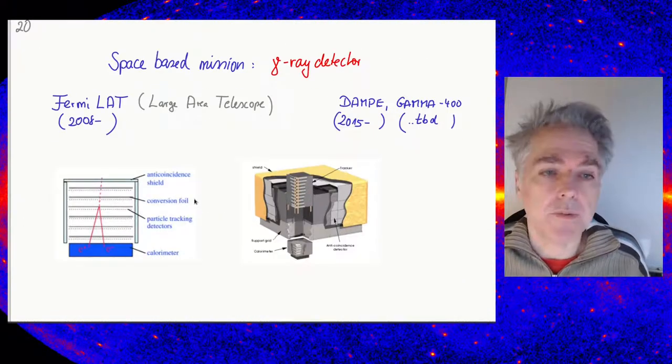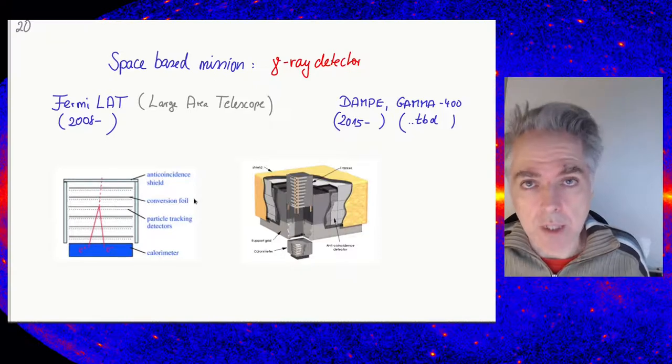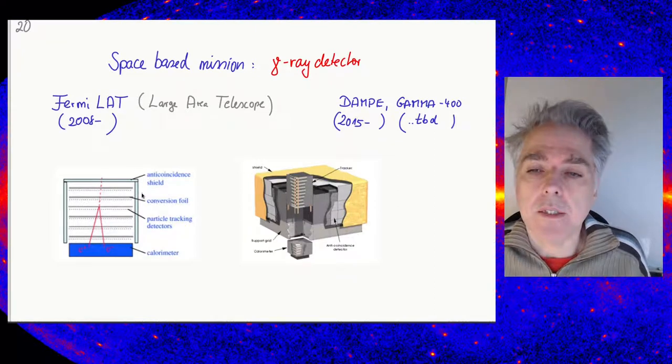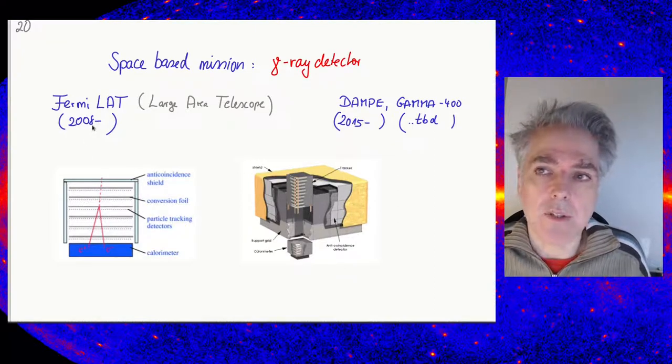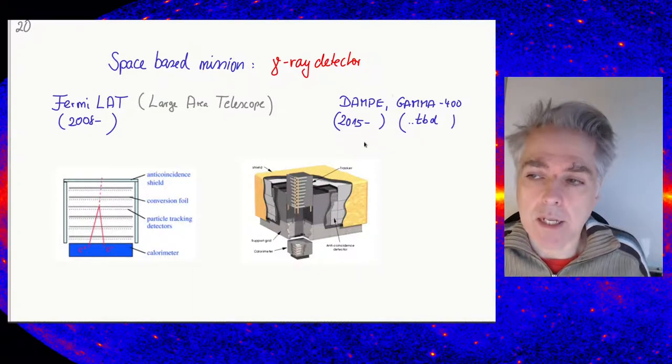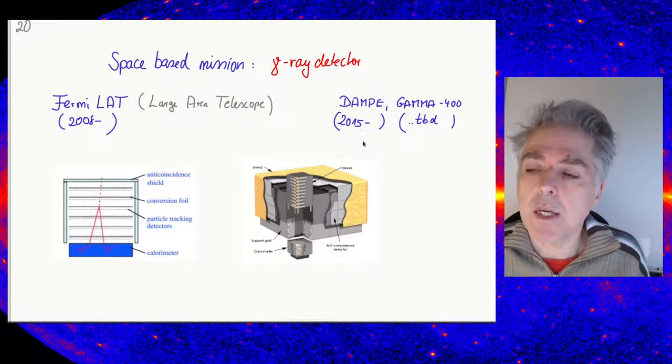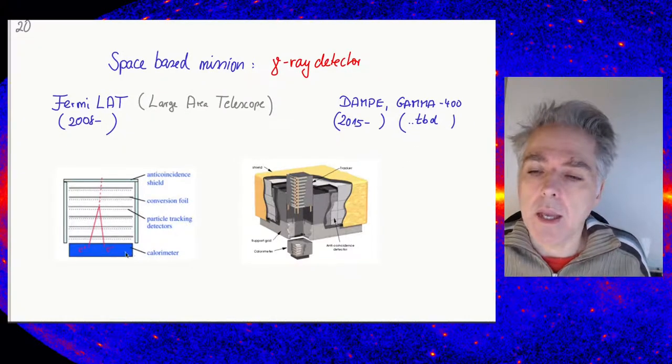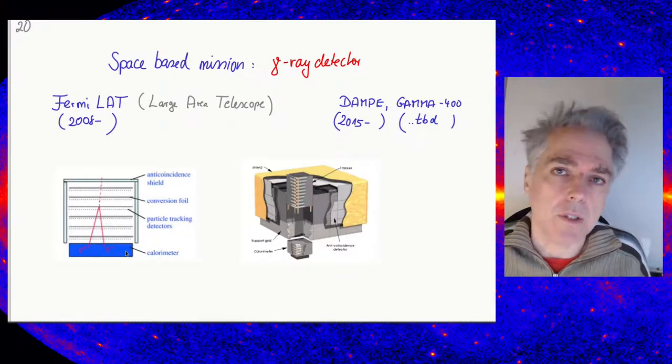As a final example for space-based missions, which does not measure charged cosmic rays but gamma rays, I want to show you the Fermi-LAT mission. This has been flying since 2008. It has some competition now: DAMPE from Chinese-Italian collaboration operating since 2015, and a Russian satellite scheduled to fly in the near future. The operational principle is always the same for these detectors.